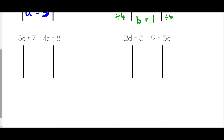In 3c plus 7 equals 4c plus 8, the smallest amount of c is the 3c on the left hand side — that's absolutely fine, we can still get rid of it. We subtract 3c from both sides, leaving 7 equals c plus 8. To get c all on its own I take away 8: 7 take away 8 is negative 1, leaving just c on the right. So c equals negative 1.